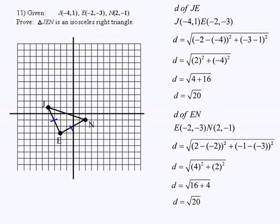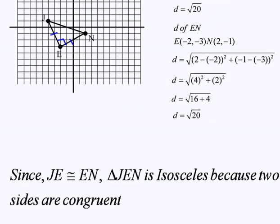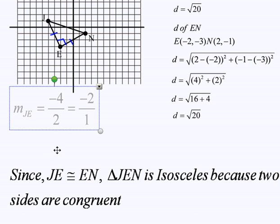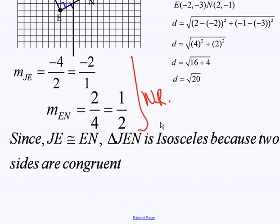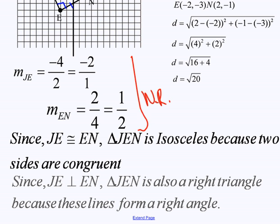Now let's show that it's a right triangle. To do that, I'm going to show that JE is perpendicular to EN. Because if these two sides are perpendicular, that means they form a 90-degree angle. And if there's a 90-degree angle, then this is a right triangle. So I found the slope of JE and the slope of EN — the slopes are negative reciprocals. Since the slopes are negative reciprocals, JE is perpendicular to EN. Since JE is perpendicular to EN, triangle JEN is also a right triangle because these lines form a right angle.